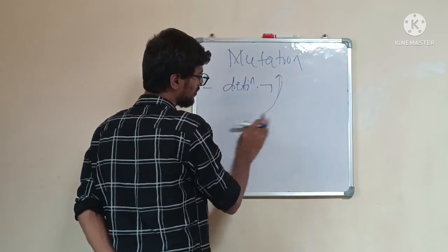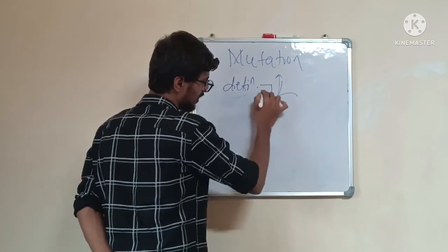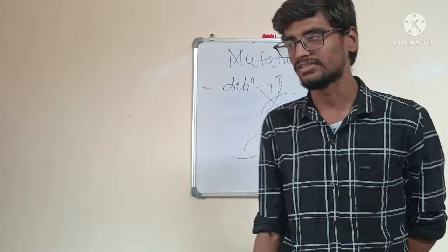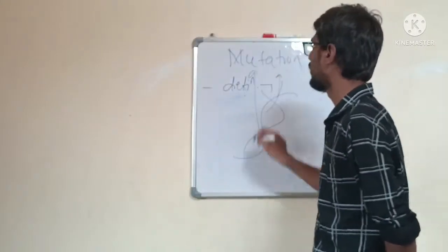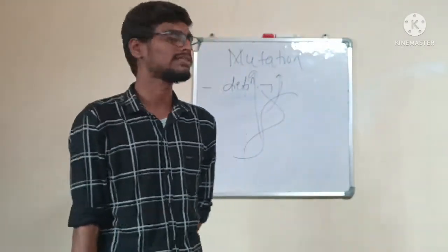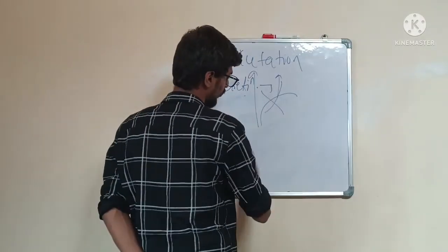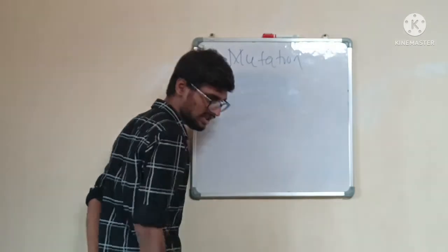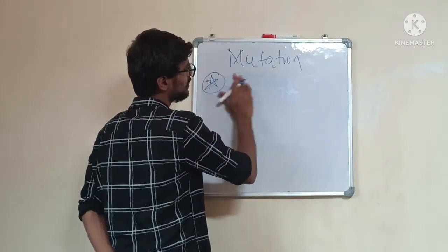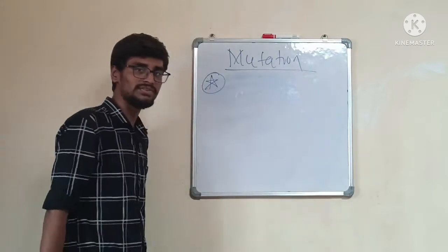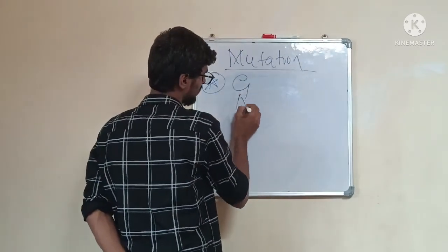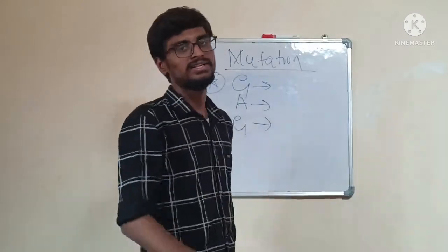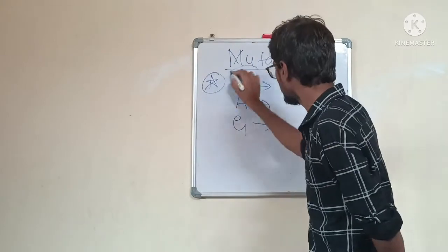Mutation occurs in the sequence of DNA — the nuclear sequence of DNA. DNA is the genetic information carrier. These genetic information cells are called DNA factors and co-factors. As an example, we take the nuclear sequence A-G-A-Z, which is one of the sequences we can see in mRNA. This is the original sequence.